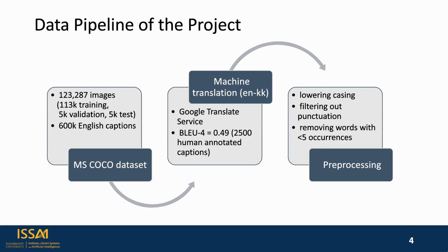A state-of-the-art Microsoft COCO dataset, consisting of over 600,000 image-caption pairs, was used as the main dataset for model training. The captions were preliminarily translated into Kazakh using an available machine translation service. The quality of the translation was ensured by satisfactory metric values obtained from 2,500 machine- and human-generated captions. Further text preprocessing included lower-casing, filtering out punctuation, and removing words with a low number of occurrences.